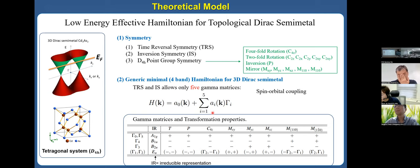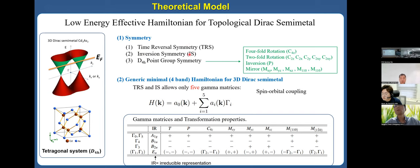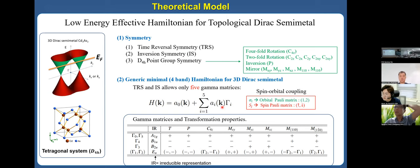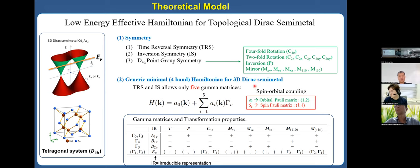These gamma matrices satisfy certain transformation properties because we constructed this Hamiltonian using symmetry constraints: time-reversal symmetry, inversion symmetry, and D₄ₕ point group symmetry from the tetragonal system. The important point is that this is a 4×4 Hamiltonian that incorporates both spin and orbital degrees of freedom. There is a strong spin-orbit coupling, so we must consider both spin and orbital to discuss the physics in this material.